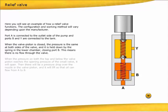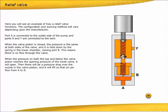When the pressure on both the top and below the valve piston reaches the opening pressure of the small valve, it will open. Then there will be a pressure drop over the nozzle in the valve piston and it will lift so that oil can flow from A to B.